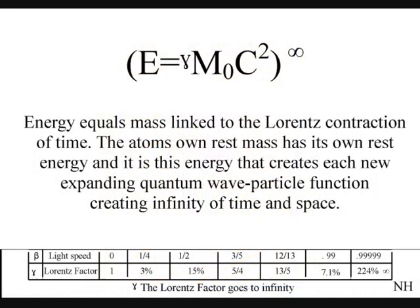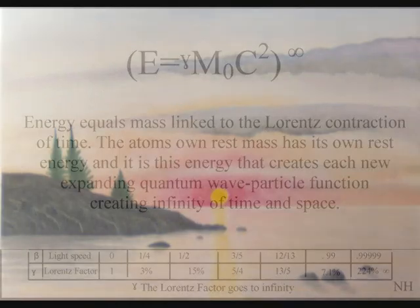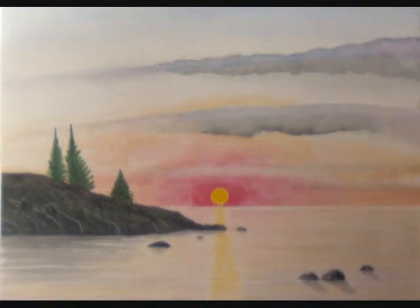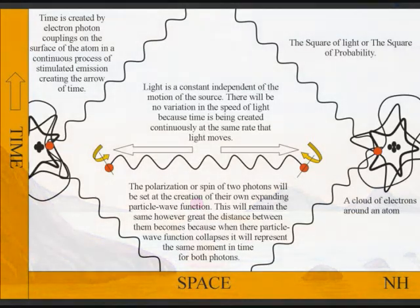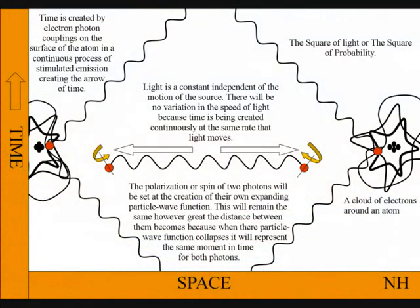We therefore live in a universe of multiple space-times, and each space-time is governed by the Lorentz contraction of time. Because this is a continuous process at the same speed that light moves, the expanding wave function of light between the atoms will always be a universal constant, independent of the motion of the source.